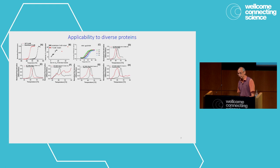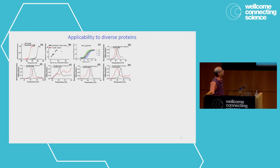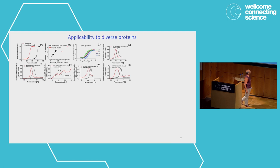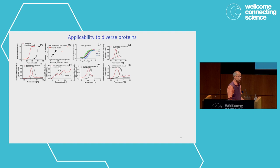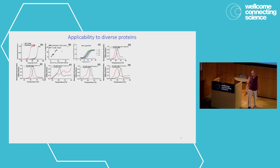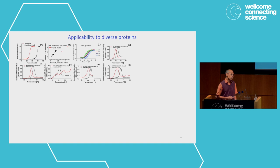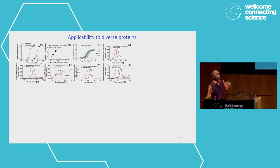We've now applied this to diverse proteins. The first panel shows the initial protein we started with, which is a bacterial toxin, and then we applied it to a region of the HIV envelope GP120 protein. We can see increases in thermal stability for the receptor binding domain of the SARS-CoV-2 spike. SARS-CoV-2 is just one of many sarbecoviruses — there are hundreds — and they can potentially come into the human population. We need to protect not only against SARS-CoV-2 variants but also other sarbecovirus variants. We took the receptor binding domains from a number of different sarbecoviruses of different clades, and in each of them we could find a substantial degree of stabilization.